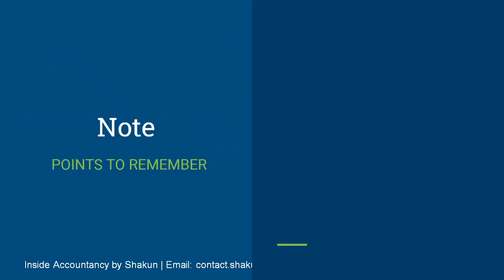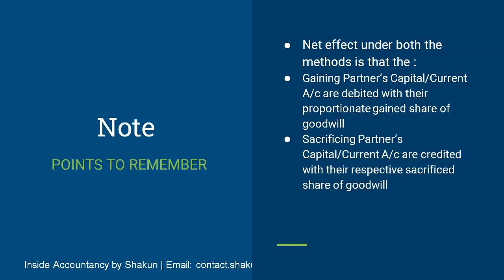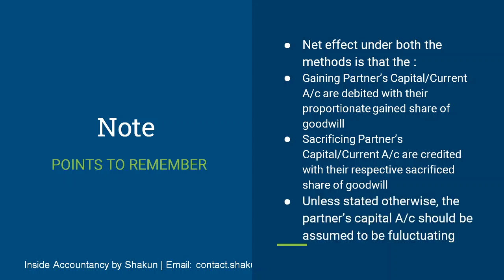The net effect under both methods is that the gaining partner's capital or current account is debited with the proportionate gained share, and the sacrificing partner's capital or current account is credited with the respective sacrifice. No matter which method you follow, the net effect is the same. Another thing to remember: unless stated in the question, the partner's capital should always be assumed to be fluctuating.